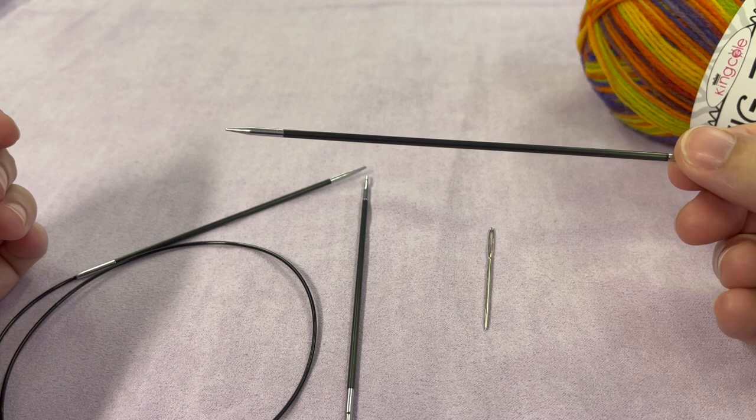And later when we get to the toe, you're going to need one double point needle that's a 2.5 millimeter as well, and one darning needle at the end to sew in your ends. So let's get started.